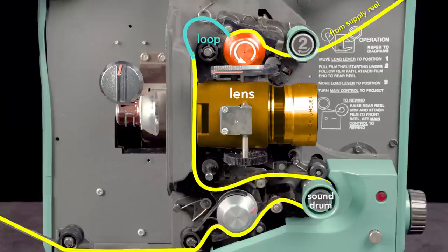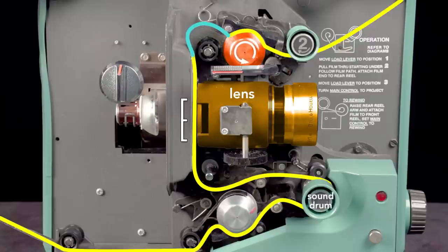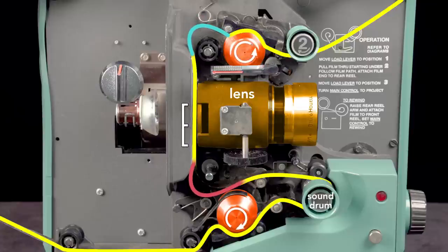This slack allows the shuttle to quickly advance to the next frame without tearing the film. A second loop of slack film at the bottom also forms. The bottom sprocket pulls the film continuously. This is important because it allows the sound to be read correctly.